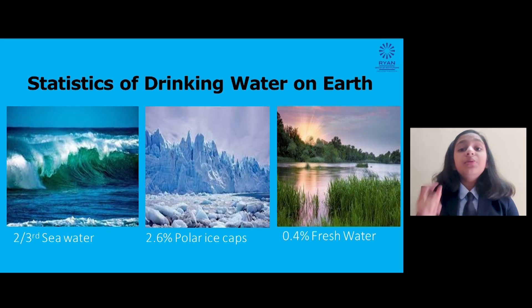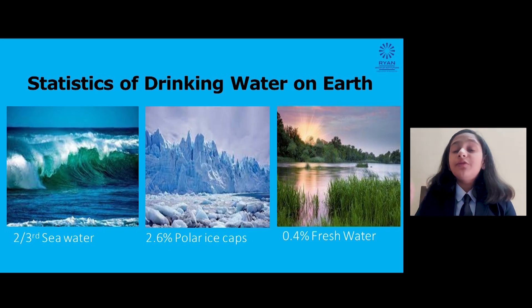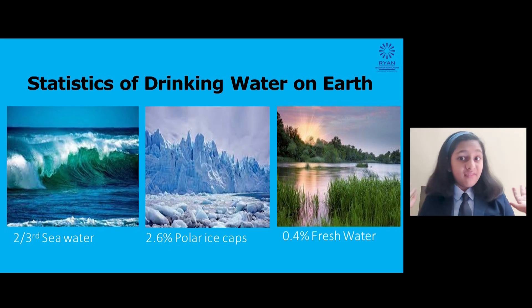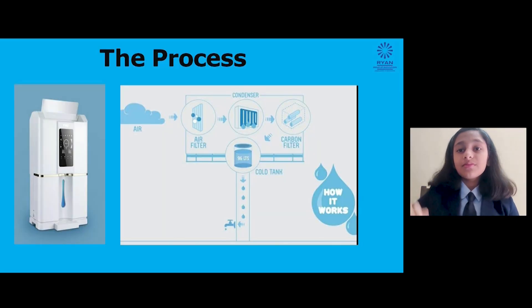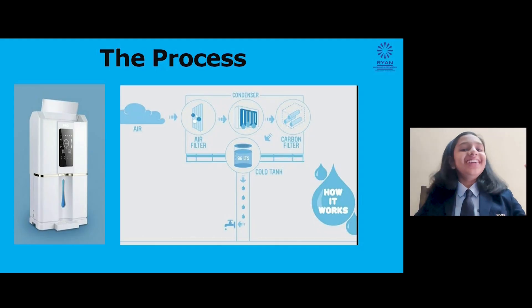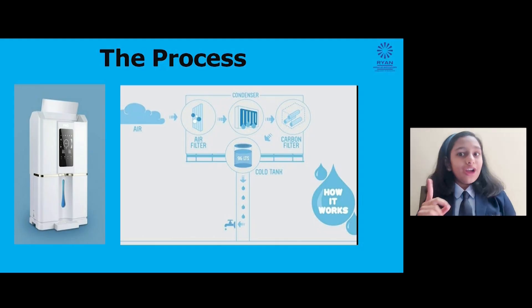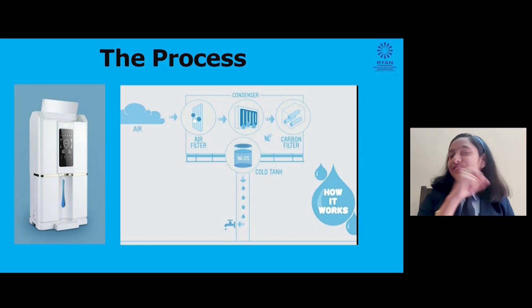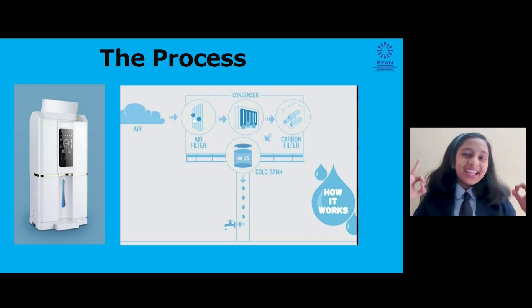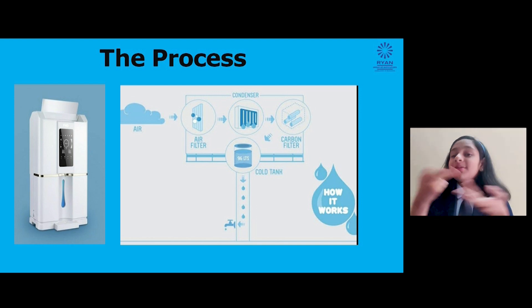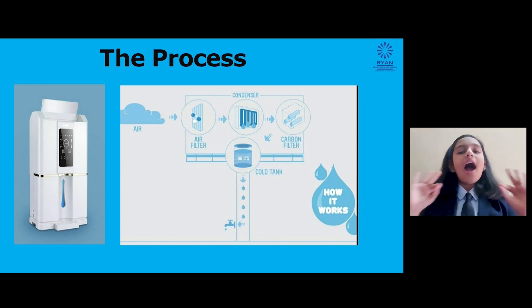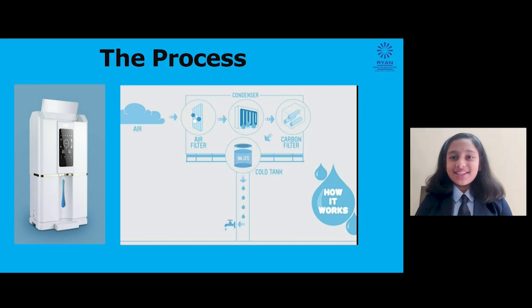This leaves us roughly with 0.4% which is usable. It's like water, water everywhere, only very little to drink. You see, warm air contains more water while cold air contains less. So if you turn warm air into cold, it gives out water. The AWG creates clean fresh drinking water through the humidity in the air via a hyper-efficient condensation process.